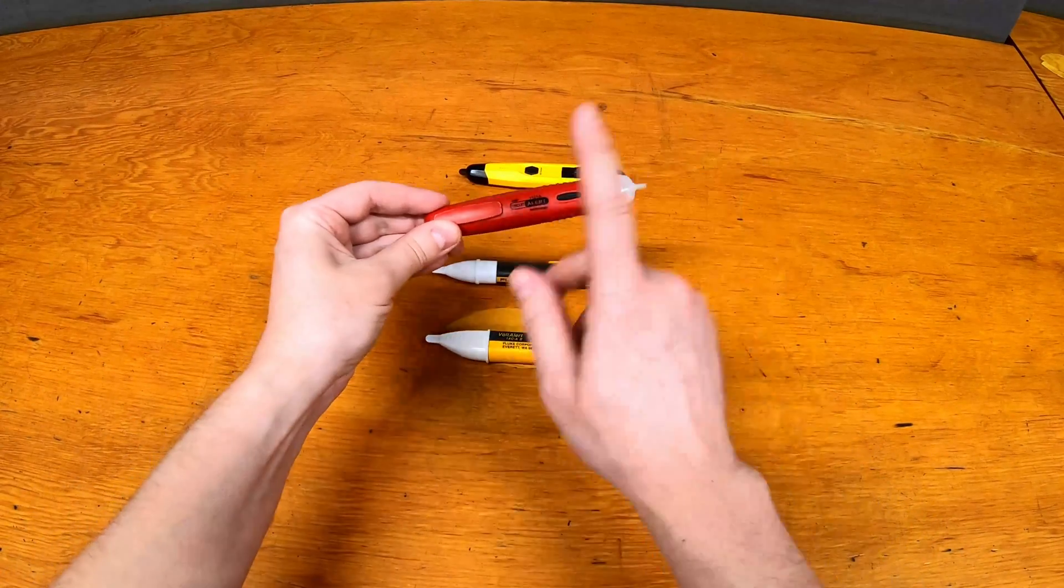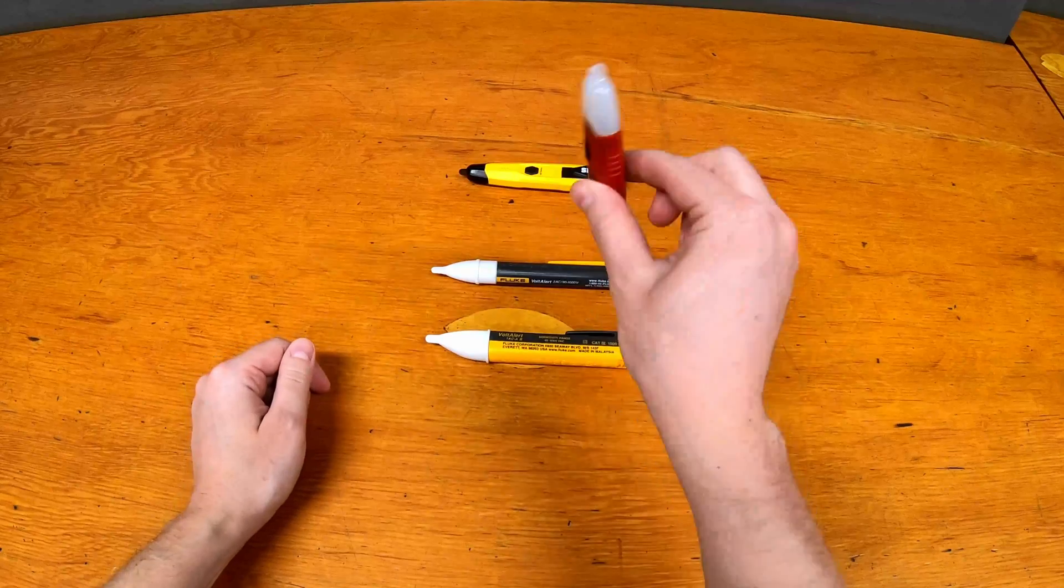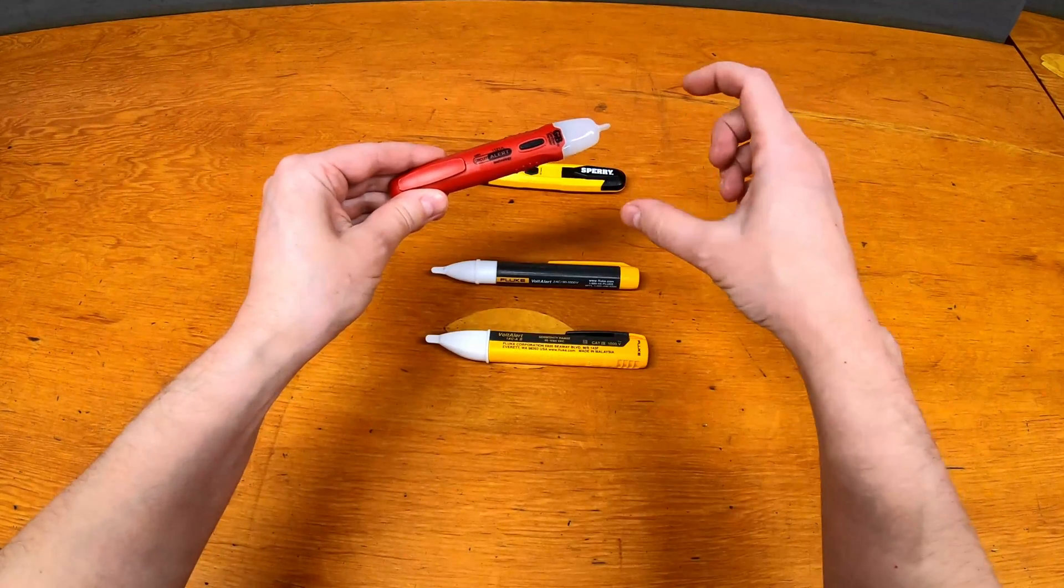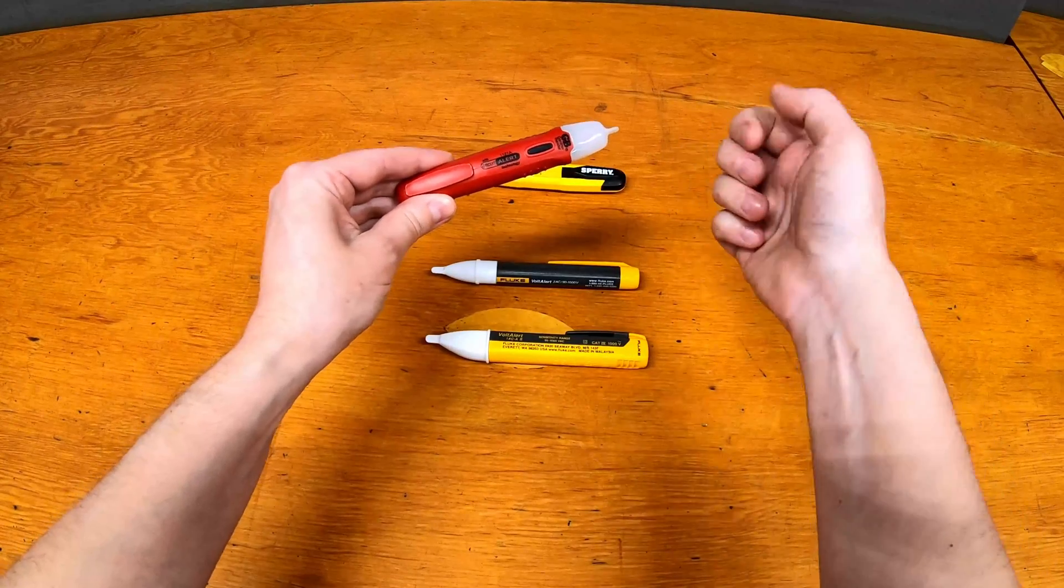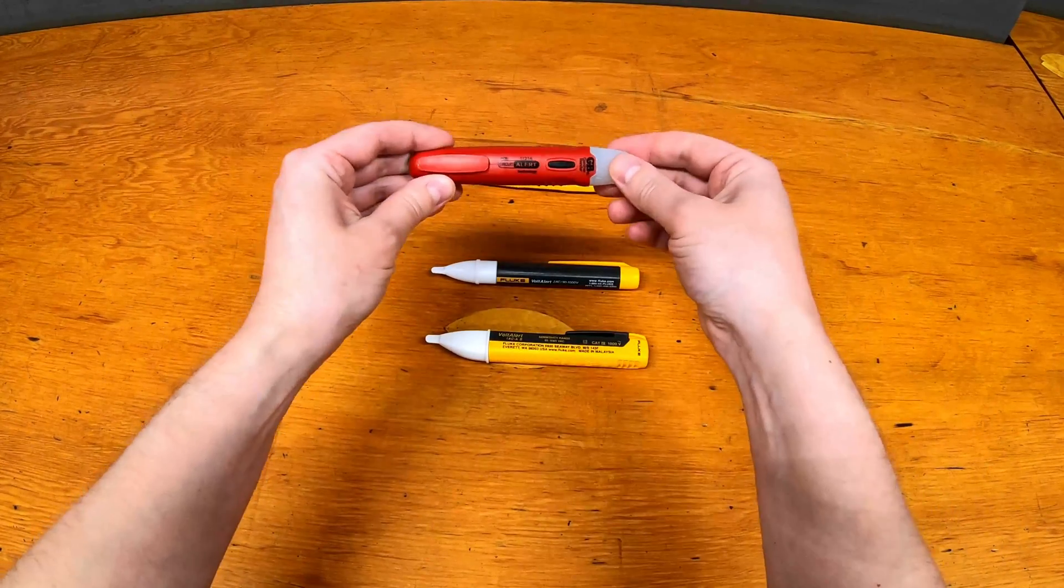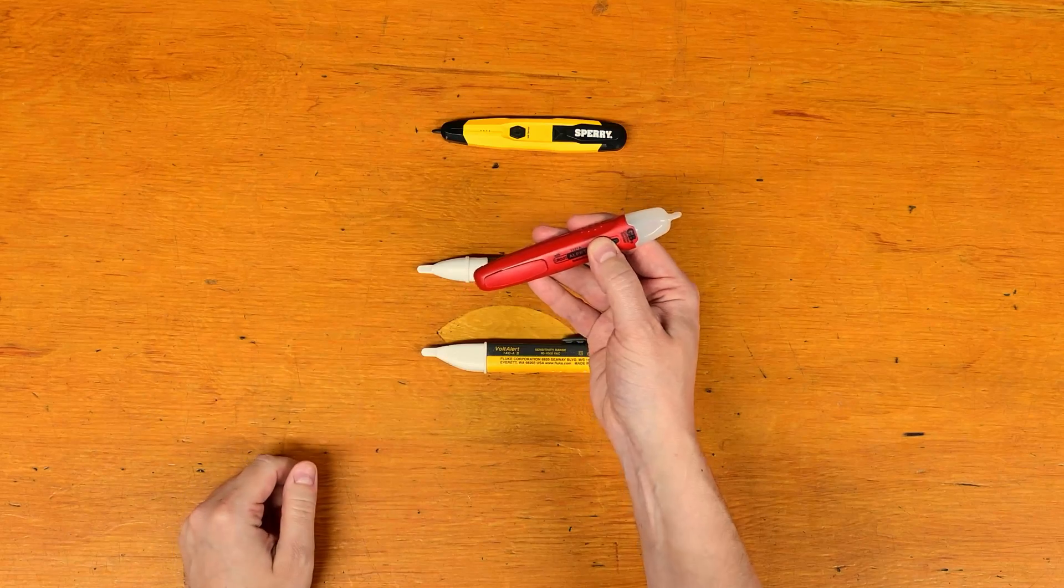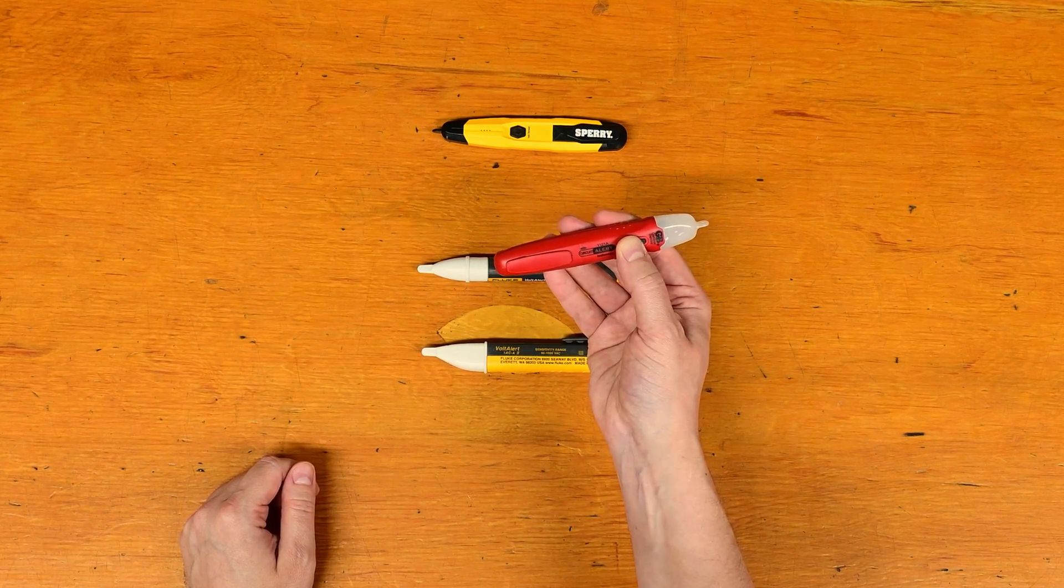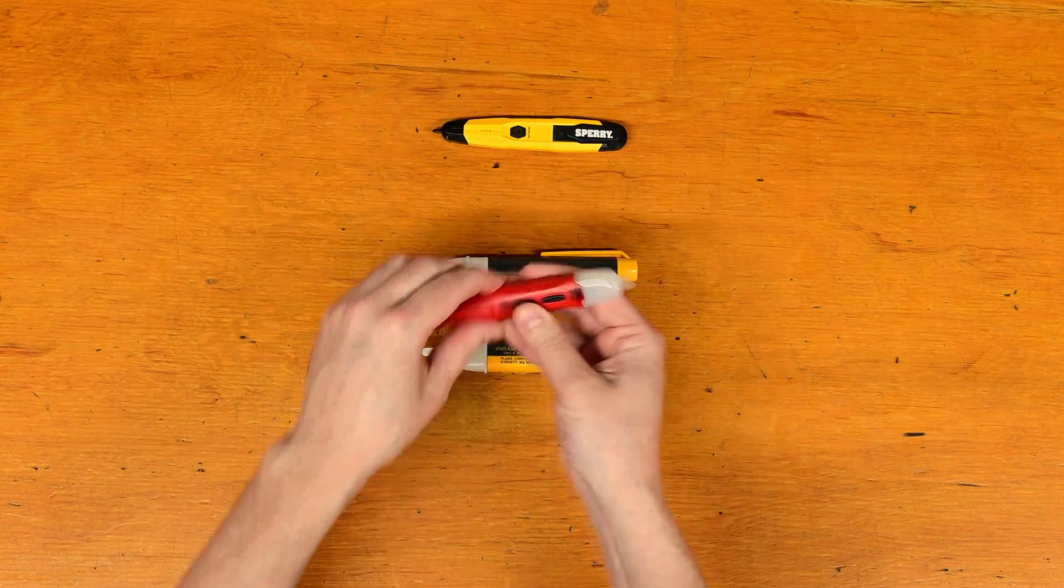Next one up is from Gardner Bender. This is probably one of the first ones I got, and they're actually quite cheap, 10, 20 bucks at most. You can usually get them in a package with the little AC plug testers that have the ground fault checker as well. This one, to use it you actually have to press and hold the button. When you press the button you can see it beeps and lights up just to show you that the battery is good, and it generally has worked quite well.